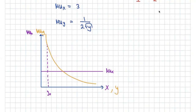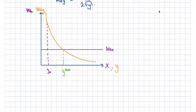As long as the marginal utility of y is still higher than x, you keep buying y — all the way up to y_max. That's the most you'd want to spend on y, because at that point the marginal utility of y equals the marginal utility of x. Beyond that, you'd rather spend extra income on x. Because I've set prices to 1, I can compare marginal utilities directly.